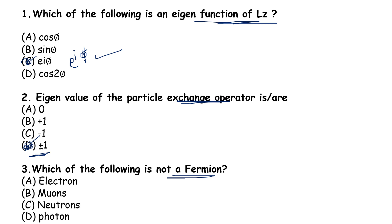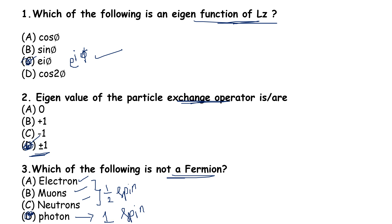This is the electron, muons, or neutrons. Fermions are those particles which have half-integer spin quantum number for their intrinsic spins. Electron, neutron, and muon all have spin value of half. Therefore, all of these are fermions. A photon has a spin value of 1, so it is not a fermion. Which of the following is not a fermion? Option D — photon — is the correct answer.